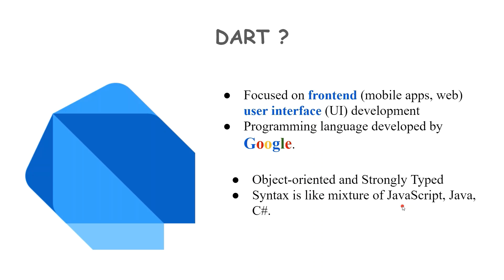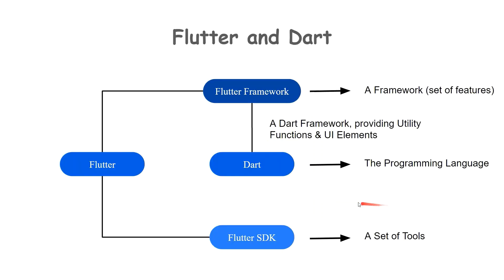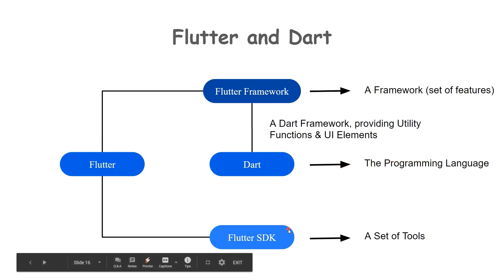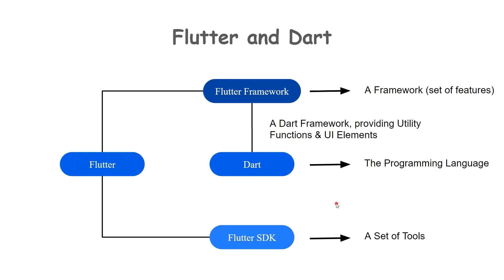Let us now look at this flowchart. We can clearly see that the Flutter framework lies above Dart. The Flutter framework is a set of features that contains both Flutter and Dart, where Dart is the programming language. Flutter contains the Flutter SDK, which is a set of tools that acts as a translator. With this, we can wrap up this section.